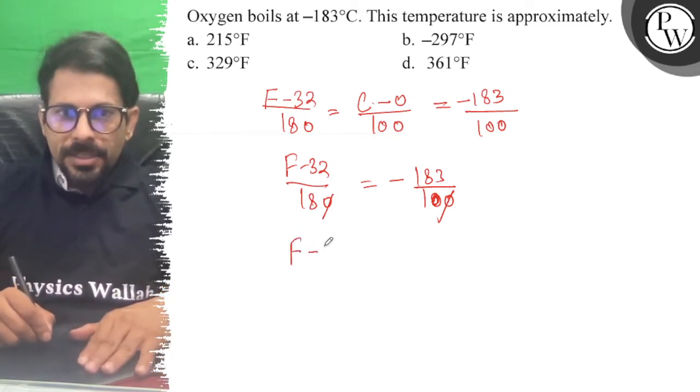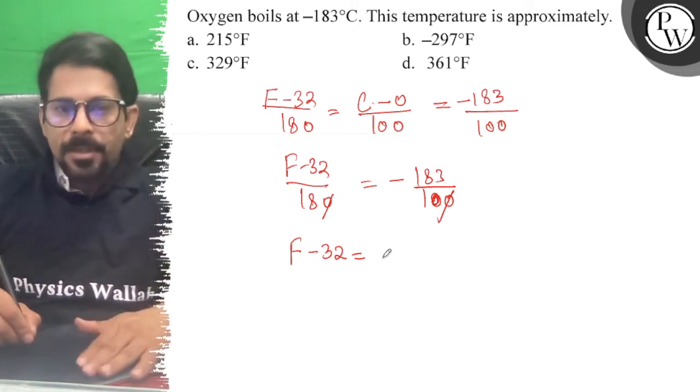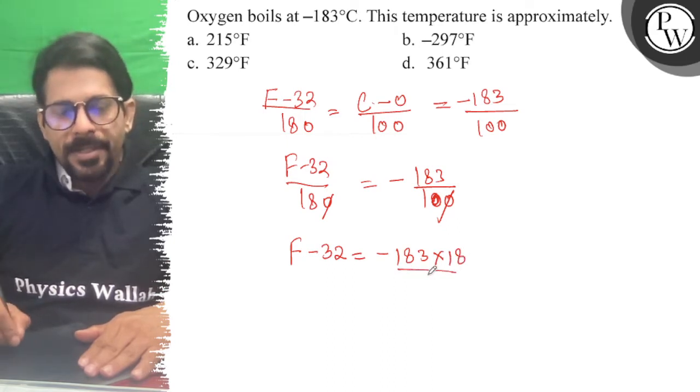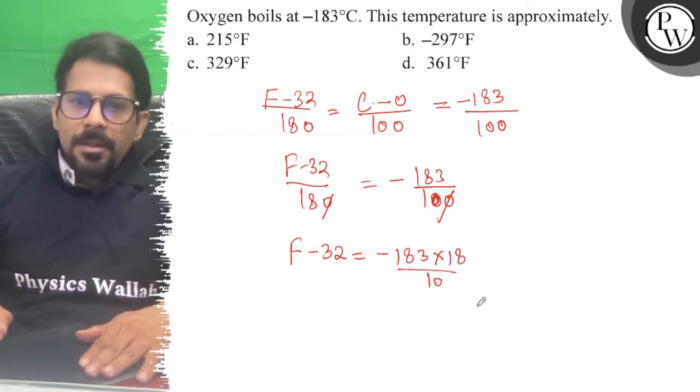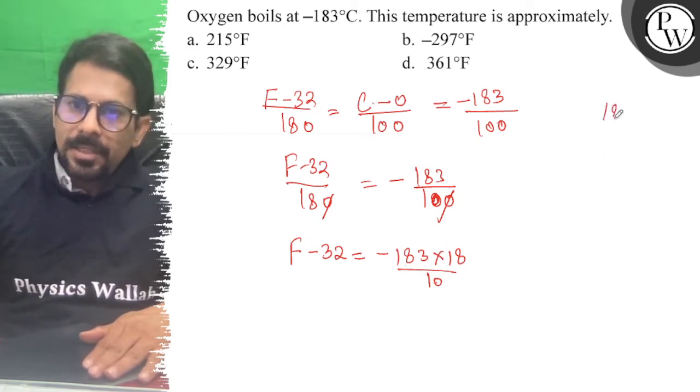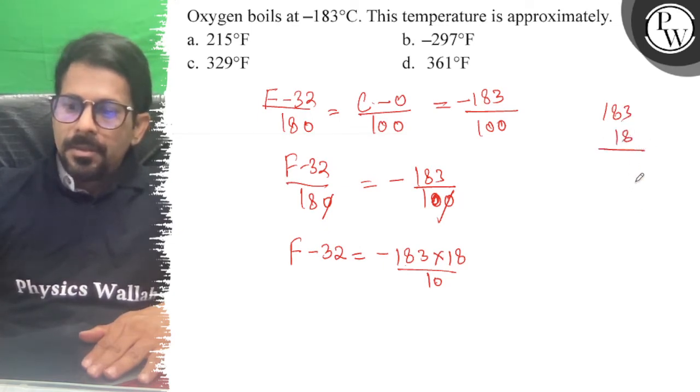So F minus 32 equals minus 183 times 180 over 100, which is minus 183 times 18 over 10. If I multiply 183 times 18, how much is it?